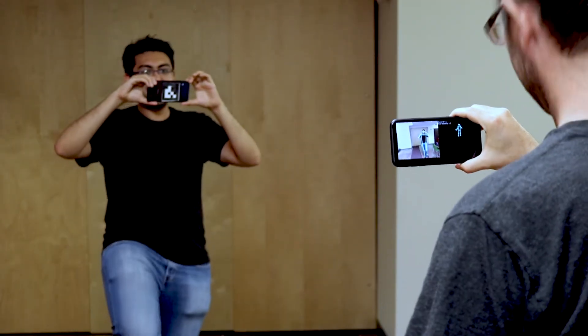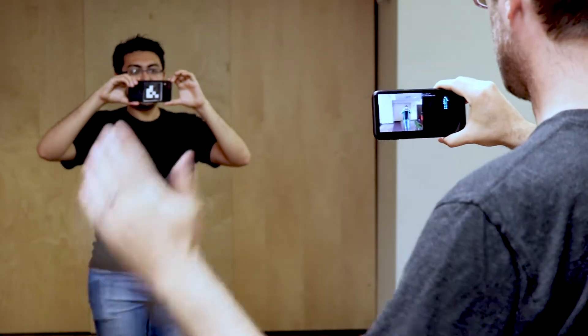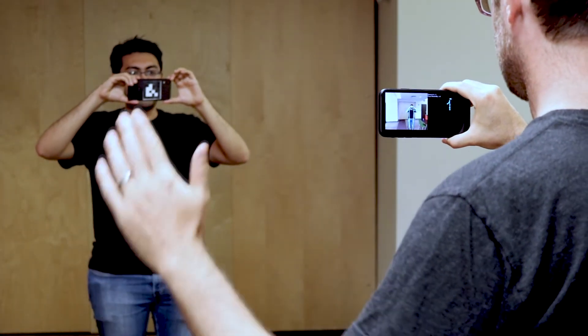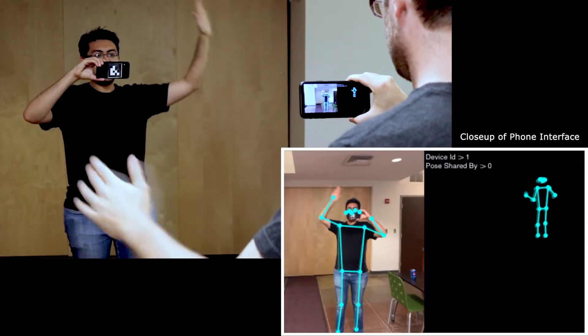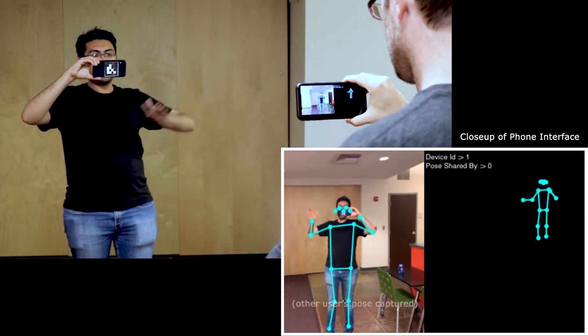In this simple example scene, two users face each other, perhaps playing a mobile AR game where full body tracking could be useful for expressive input. Unfortunately, neither phone is able to see and thus digitize its owner's body. However, the other person's phone can.